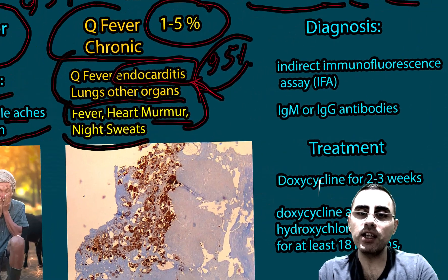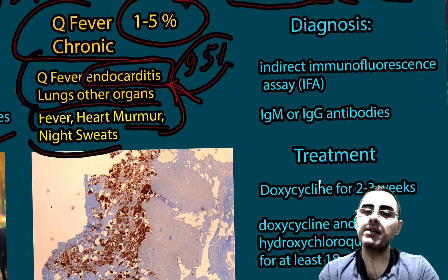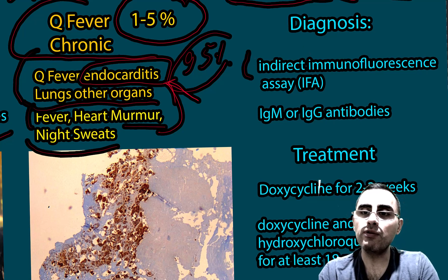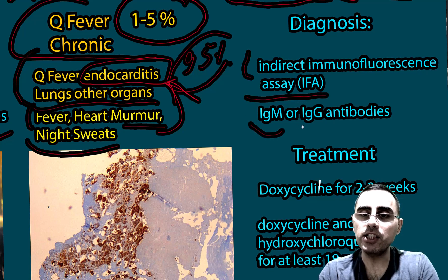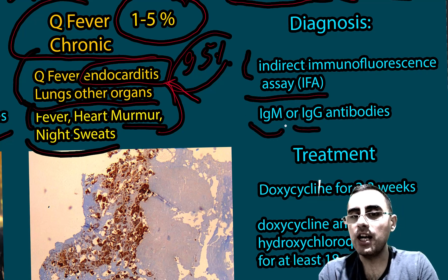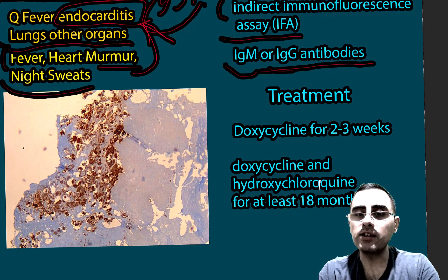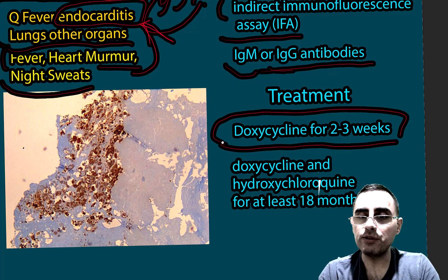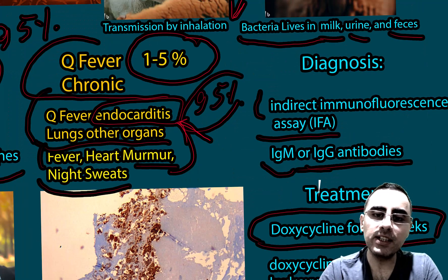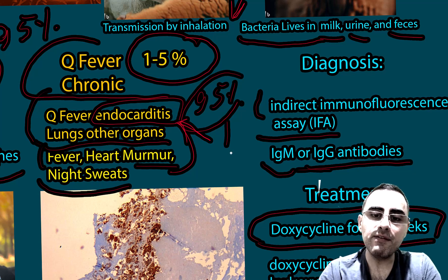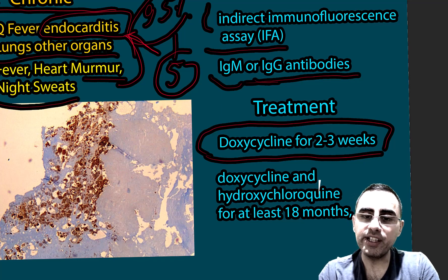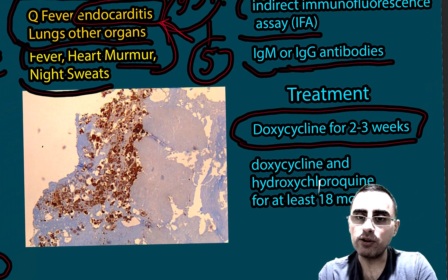Diagnosis is made by serology, especially indirect immunofluorescence assay (IFA), where we try to identify IgM and IgG antibodies. This is the gold standard of diagnosis. Treatment is the antibiotic doxycycline for two to three weeks. Treatment is very effective, and the fatality rate drops to less than 5% if the disease is treated. Early diagnosis is also crucial.